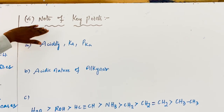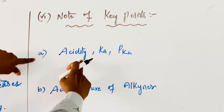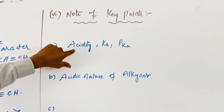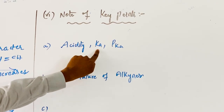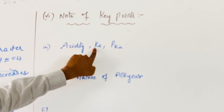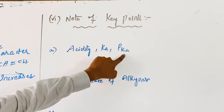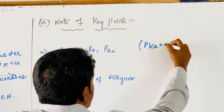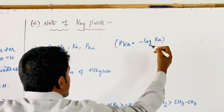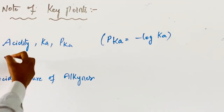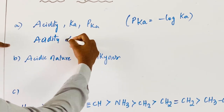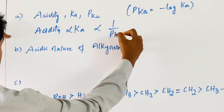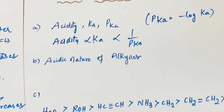Note: regarding the applications of hydrocarbons — the first and foremost point is the acidity relation of a given organic compound with Ka, the dissociation constant for acid. pKa is defined as pKa equals minus log of Ka. Acidity is directly proportional to Ka value and inversely proportional to pKa value. While discussing the acidity nature of alkynes: C2H2 is greater than C3H4.